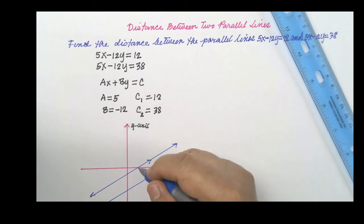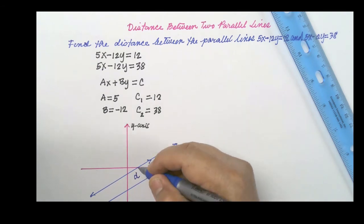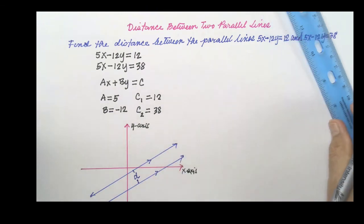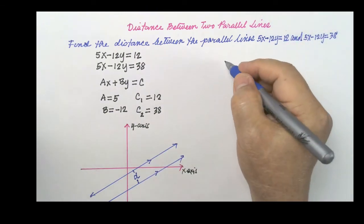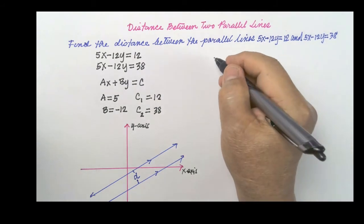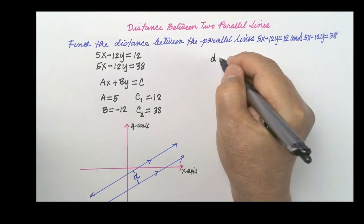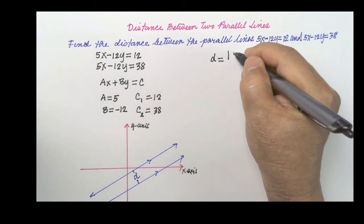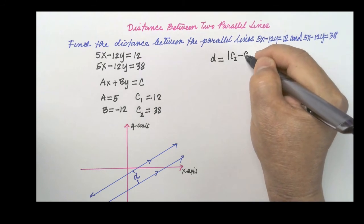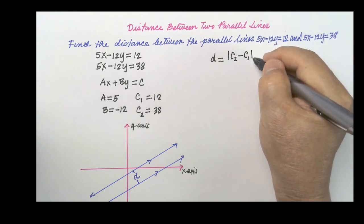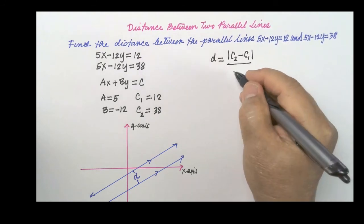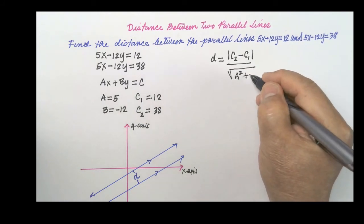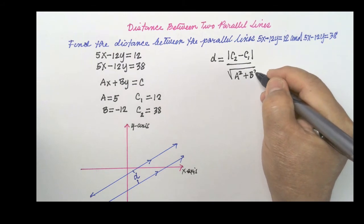Let us now solve for the distance. To solve for the distance, we are going to use the formula: D is equal to the absolute value of c sub 2 minus c sub 1, over the square root of a squared plus b squared.